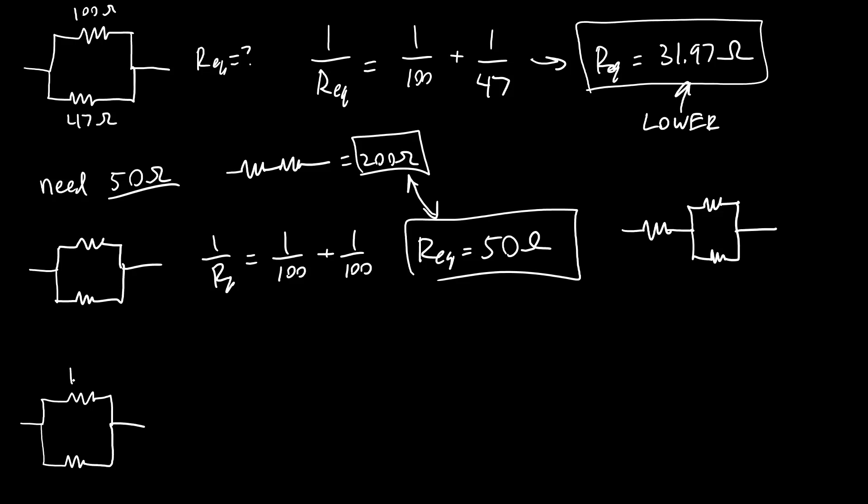So say we have now a 1 kilo ohm resistor in parallel with our 47 ohm resistor, and again we want to calculate Req. Using this equation, that's going to be 1 over 1000 plus 1 over 47. And if you plug that in and solve for Req, you get that the equivalent resistance is 44.89 ohms.